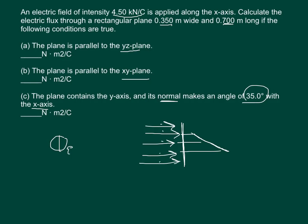So in our first situation, this is our y-axis, this is my x-axis, and there's my z-axis. In part A, it says that the plane is parallel to the yz-plane, so that means it's cutting through perfectly perpendicular to the x-axis. Perfectly perpendicular means that the electric flux is equal to the surface area times the electric field, times the cosine of 0, which equals 1.